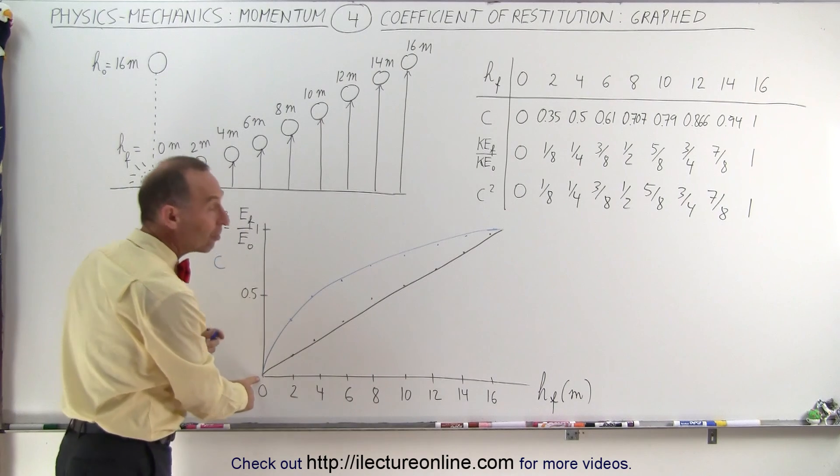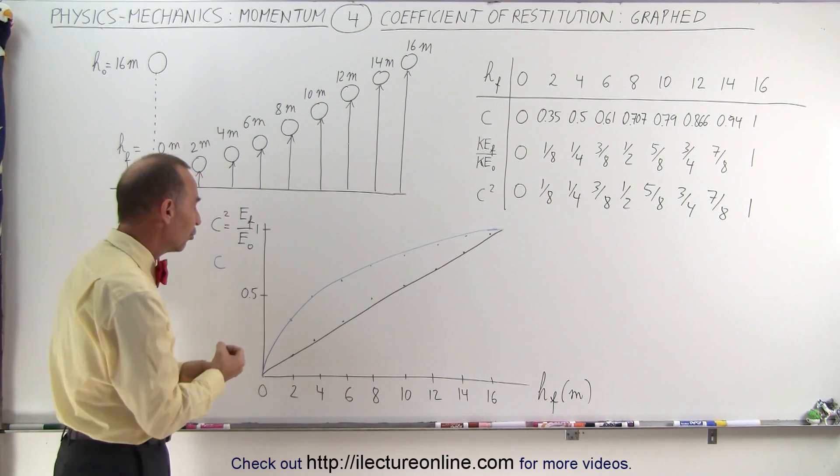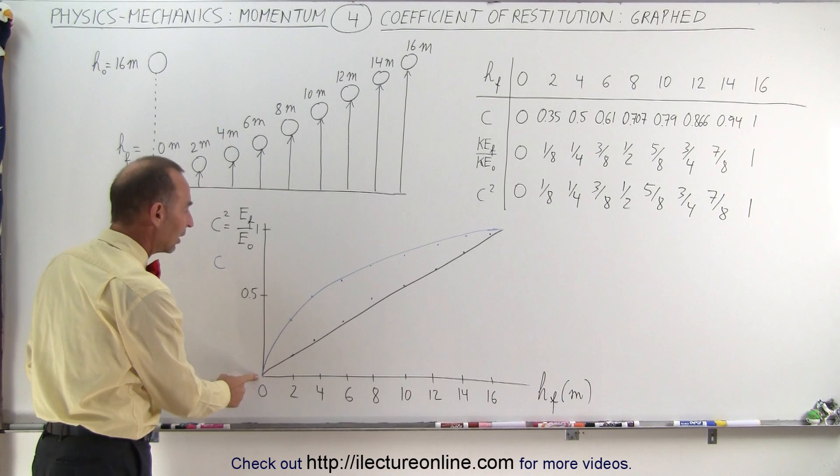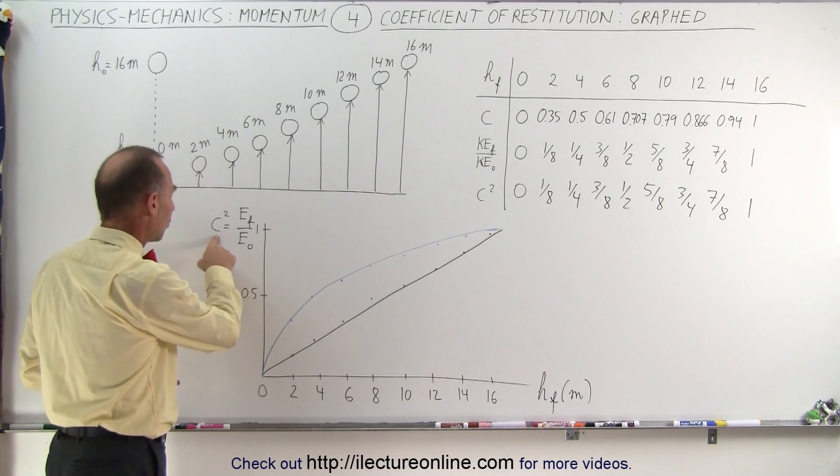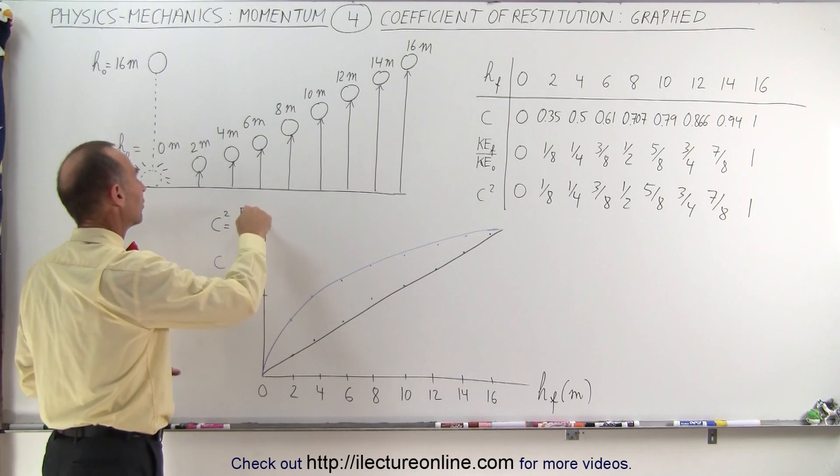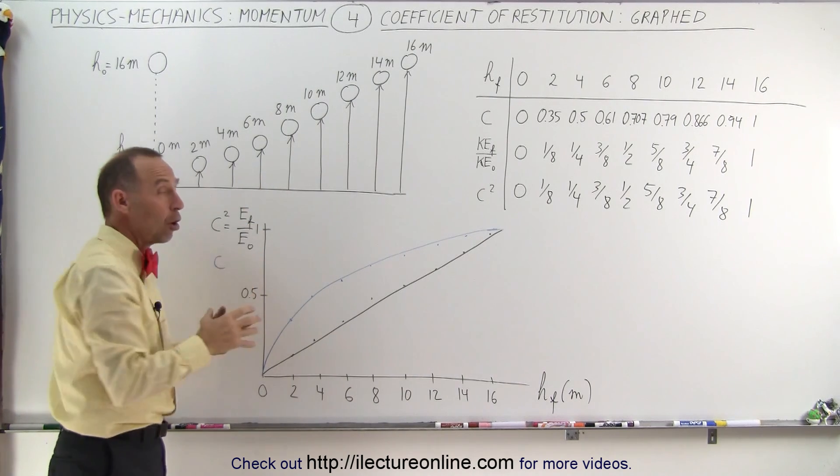They meet at zero. In other words, if zero energy is restored, if all the energy is lost in the collision, the coefficient of restitution is equal to the coefficient of restitution squared, which is equal to the ratio of the final energy to the initial energy, all of them being zero.